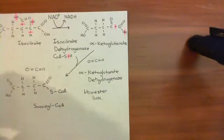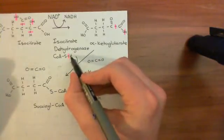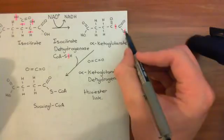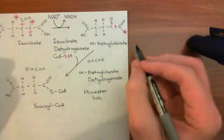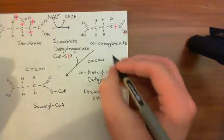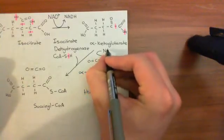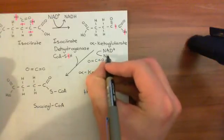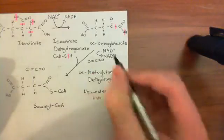We still haven't mopped up everything. Again, we have a hydrogen atom here — a proton with an electron. And again here we imagined giving the electron back to the hydrogen. So we still have two hydrogen atoms. Of course, we'll mop those up with a molecule of NAD. We'll bring in oxidized nicotinamide adenine dinucleotide, and we'll produce reduced nicotinamide adenine dinucleotide.